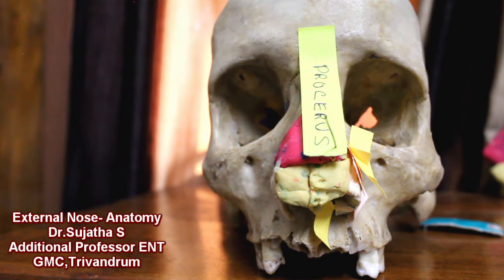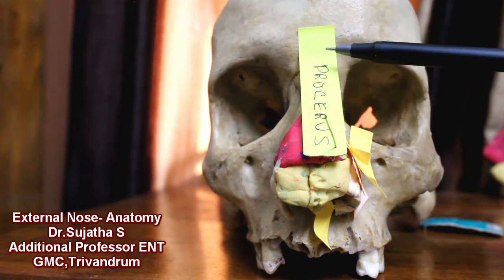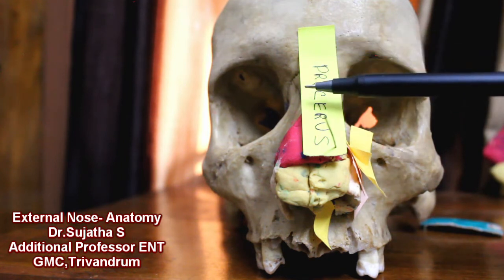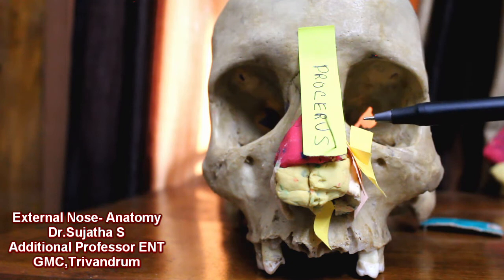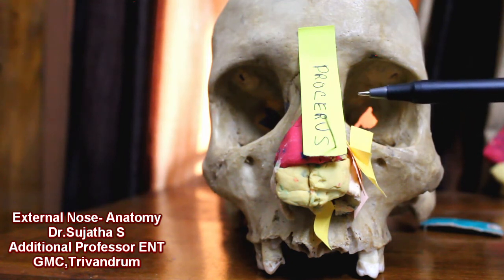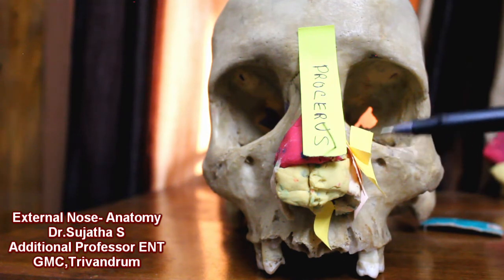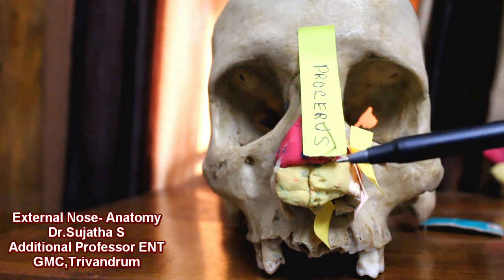The external nose is actually a pyramid and it consists of an osteocartilaginous framework covered by muscles and skin. Regarding the skin, its thickness varies over different parts. Over the dorsum and the sides of the nose it is very thin and loosely adherent, whereas towards the tip of the nose and in the ala cartilage area it is very thick and adherent.